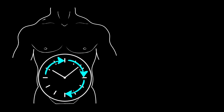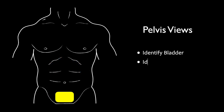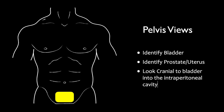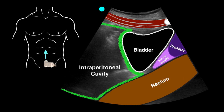After completing the left upper quadrant, we continue clockwise down to visualize the pelvis. We want to identify the bladder and any other organs — in males, the prostate; in females, the uterus — then look cranial to these structures into the intraperitoneal cavity. In a male patient, the probe marker is directed towards the umbilicus, dragged down right above the pubic bone. We see the bladder, and inferiorly the prostate and seminal vesicles. Those are not part of the intraperitoneal cavity, so we look up into the abdomen for free fluid.